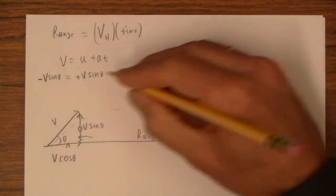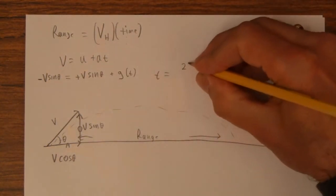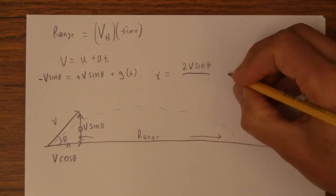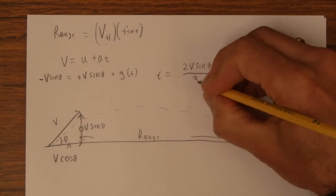Well, time is just simply going to be, if you solve that, you're going to get 2V sin theta divided by g.